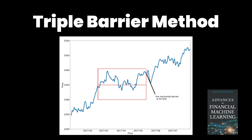We're going to create a position, and our position will have a signal that will be valid for X minutes — that's our time limit. If the position reaches the take profit before the time limit, the position is closed by take profit. If it reaches the stop loss before the time limit, it's executed by stop loss. If neither is reached, it will be closed by the time limit, which can be a profit or loss depending on the return at that time.